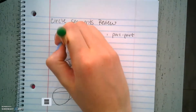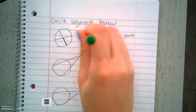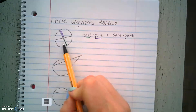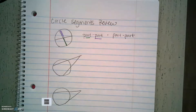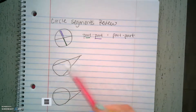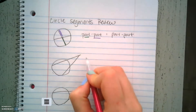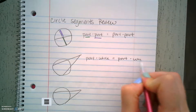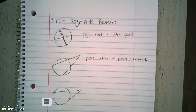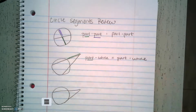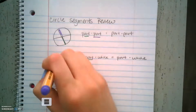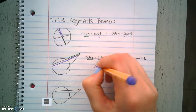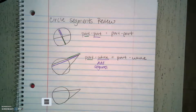When you have a secant, remember a secant crosses through our circle but makes a vertex outside of the circle. That formula is part times the whole line equal to part times the whole line. The part is always the outside — the external part — and the whole line is found by adding the segments together.